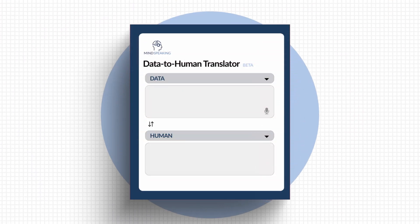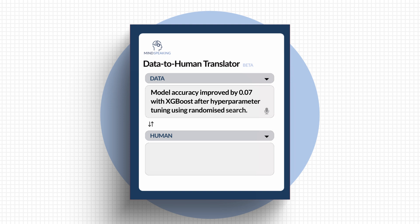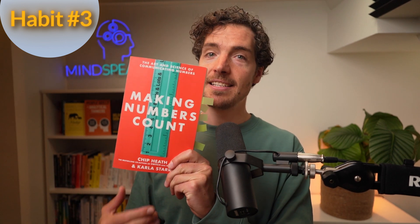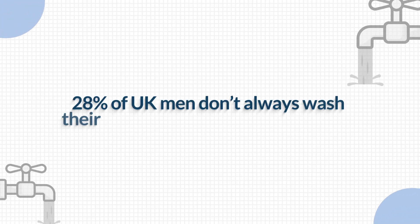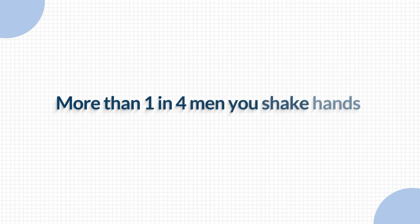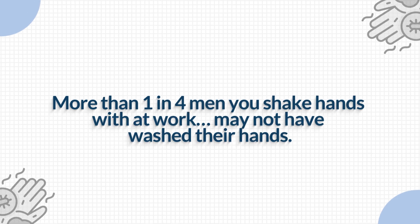Numbers don't speak for themselves — we have to speak for them, be that translator. Consider: 'Model accuracy improved by 0.07.' Run that through the data-to-human translator: 'We're better at reaching the right customers now.' The book Making Numbers Count has great examples of this. Here's one: '28% of UK men don't always wash their hands after using the bathroom.' Kind of gross. Now try: 'More than one in four men you shake hands with at work may not have washed their hands.' Now it sticks — and makes you wonder, do you still want to shake hands at the office?